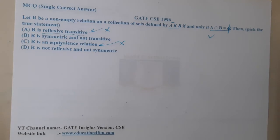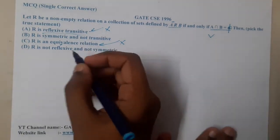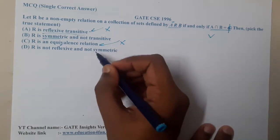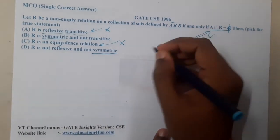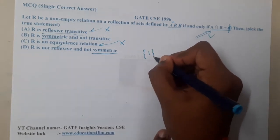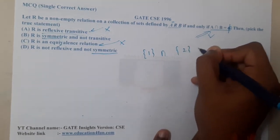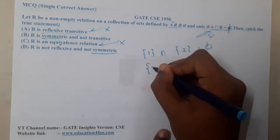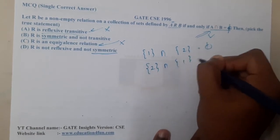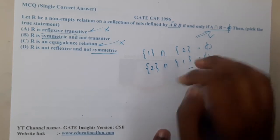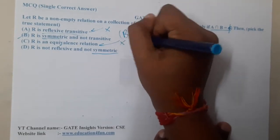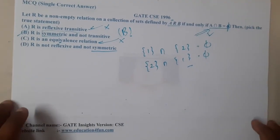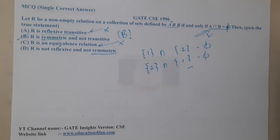Now coming to options B and D, let's check the concept of symmetry. If a has element 1 and b has element 2, then a intersection b equals the empty set. Similarly, b intersection a also equals the empty set. There is no significance of order here, so the relation is symmetric. Hence option B is the correct answer.